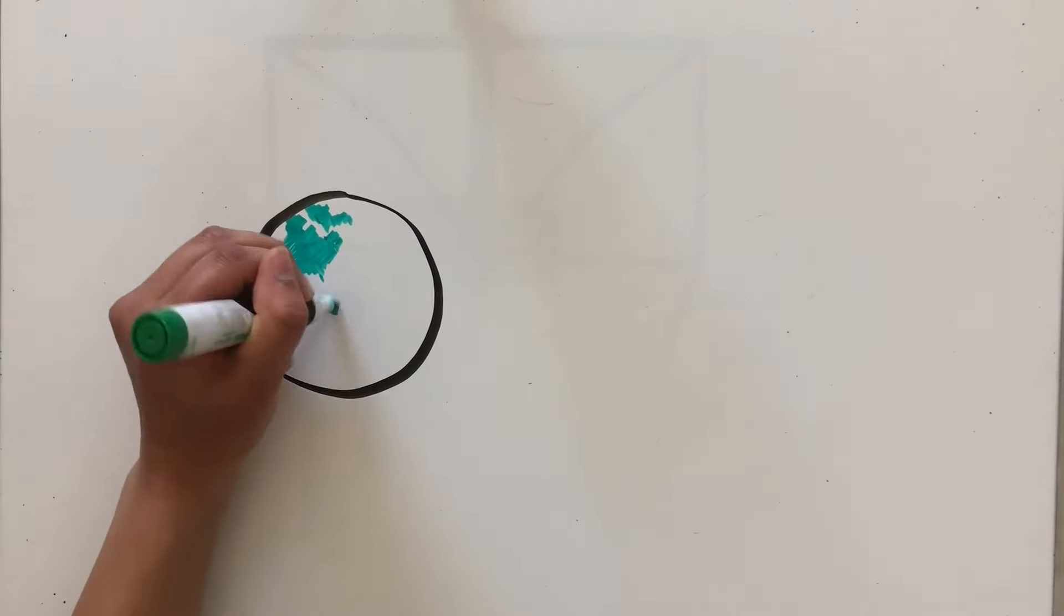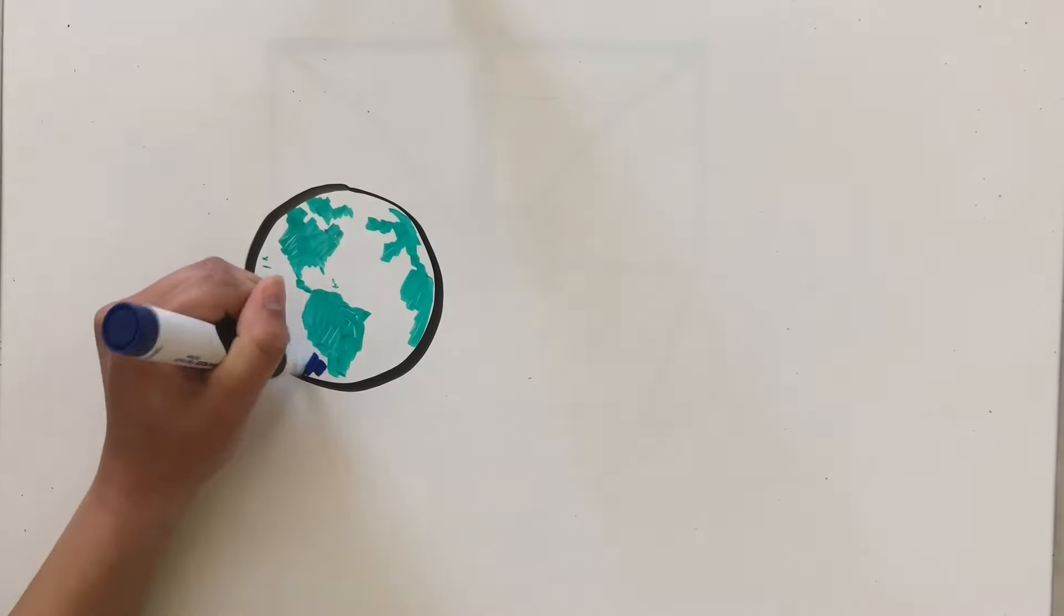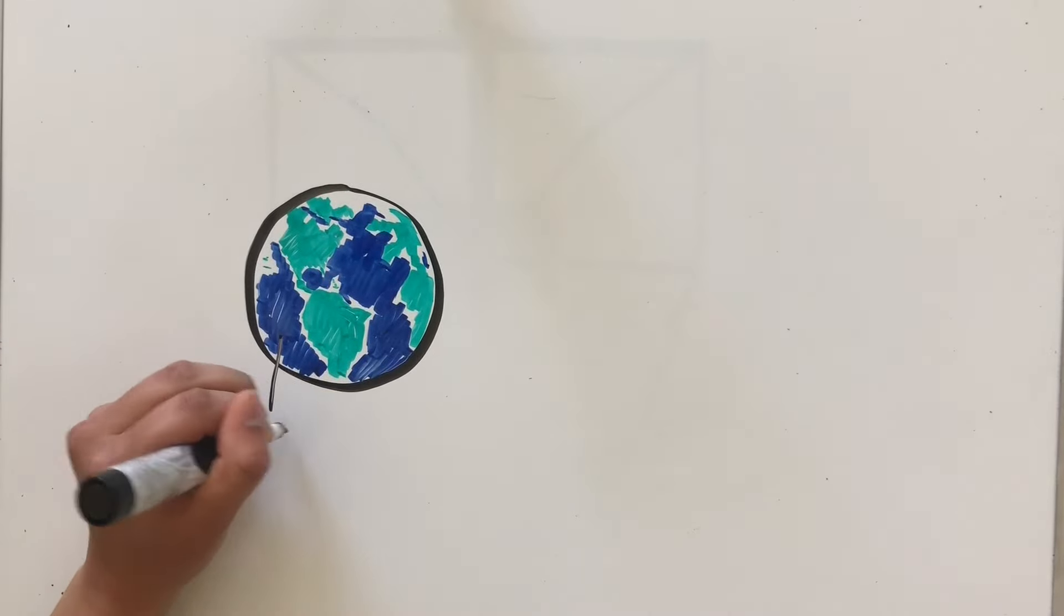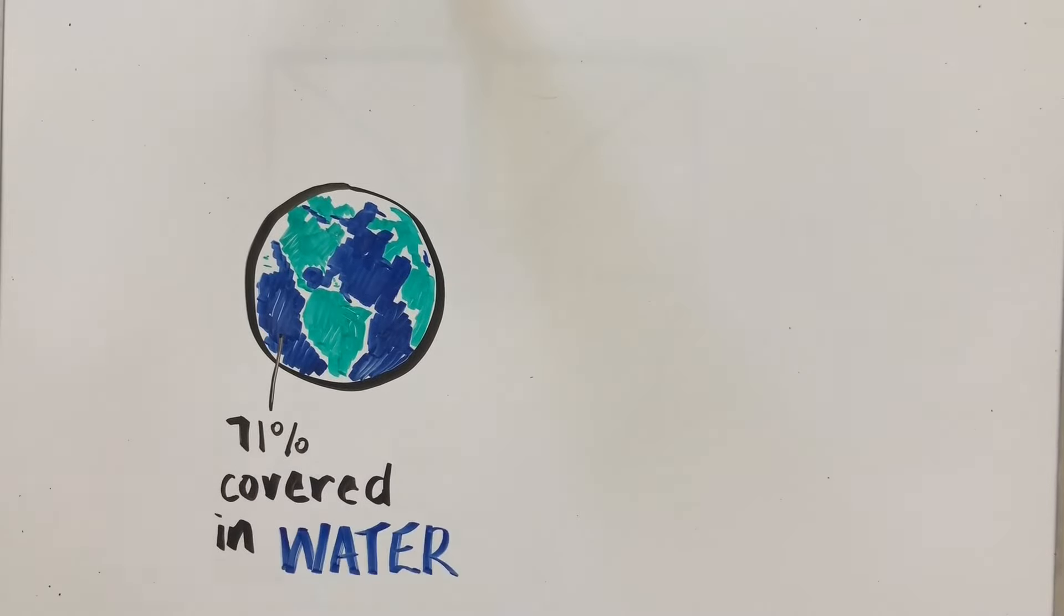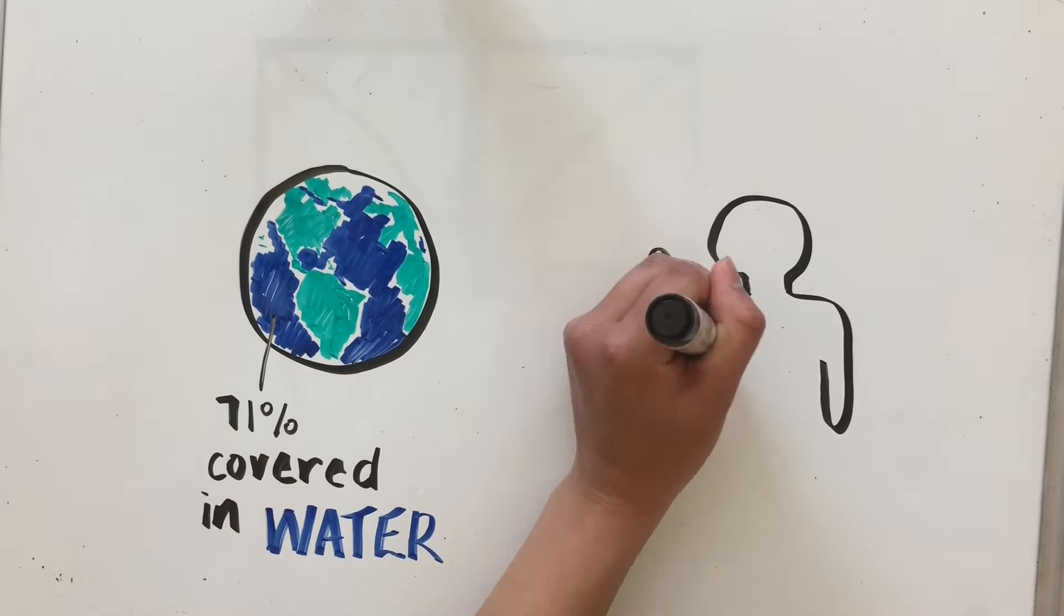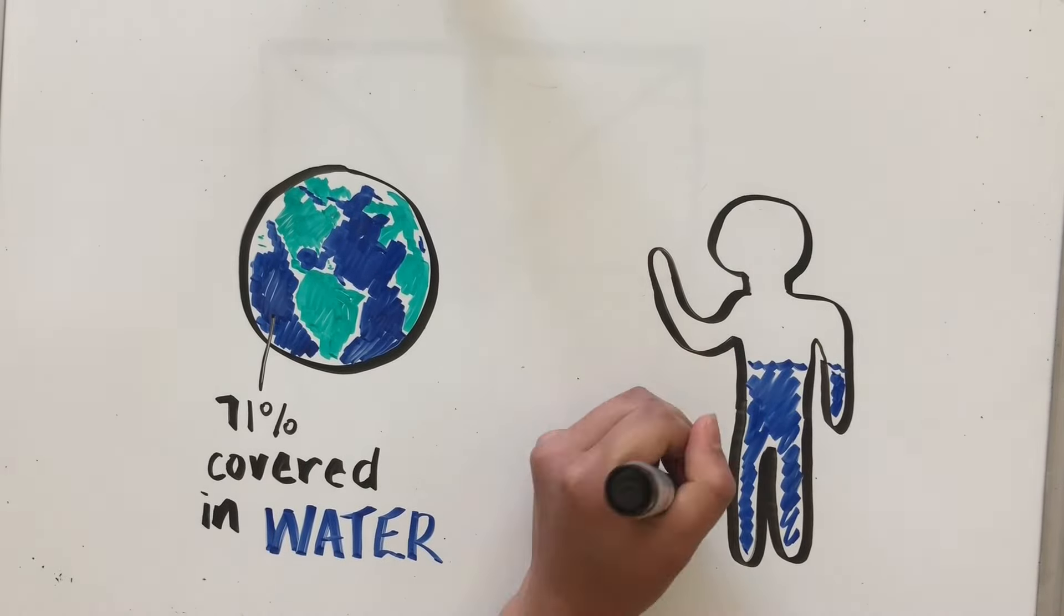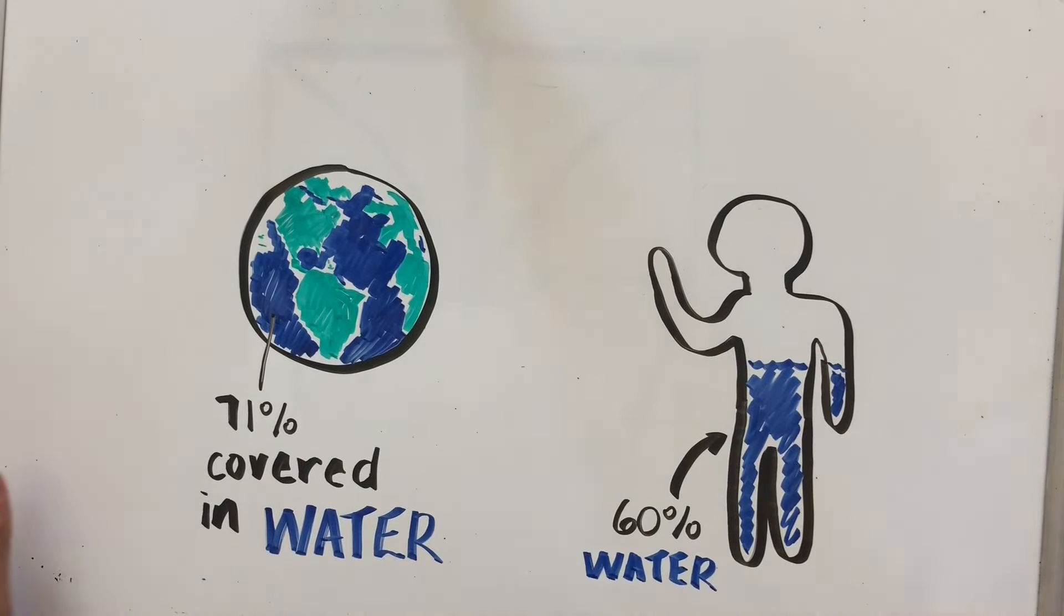Our Earth is amazing because of the water it provides in its oceans, rivers, and even our atmosphere. It covers around 71% of the Earth's surface. Without water, no organisms are able to survive. Up to 60% of the human body is water. We need it for drinking, bathing, and so much more.